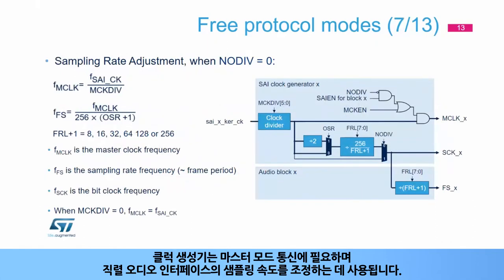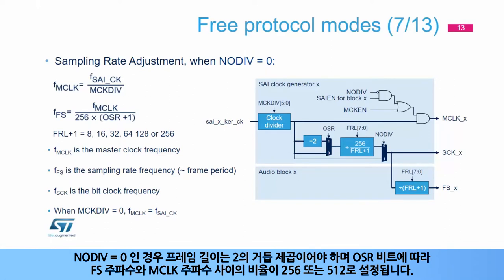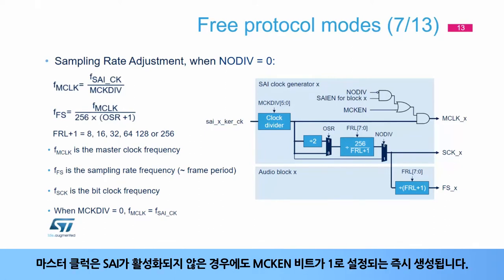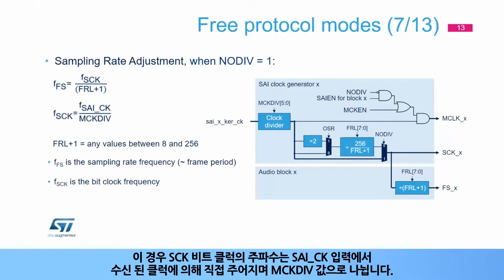The clock generator is needed for master mode communications and is used to adjust the sampling rate of the serial audio interface. It provides the root frequency for the MCLK, SCK, and FS. When NODIV equals 0, the frame length must be a power of 2, and the ratio between the FS frequency and the MCLK frequency is set to 256 or 512 according to the OSR bit. The SAI_X_KER_CK is provided by the RCC block. The master clock is generated as soon as the MCKEN bit is set to 1, even if the SAI is not enabled. When NODIV equals 1, the frame length can take any value from 8 to 256, and the frequency of the SCK bit clock is directly given by the clock received on SAI_CK input divided by the MCK_DIV value.